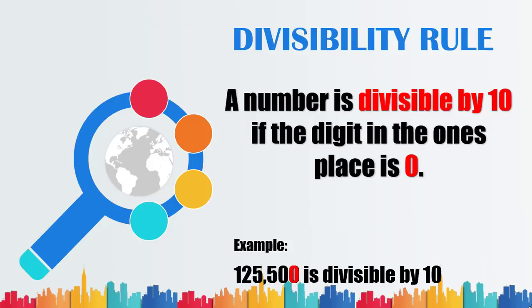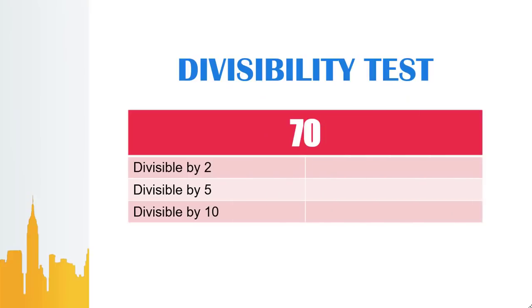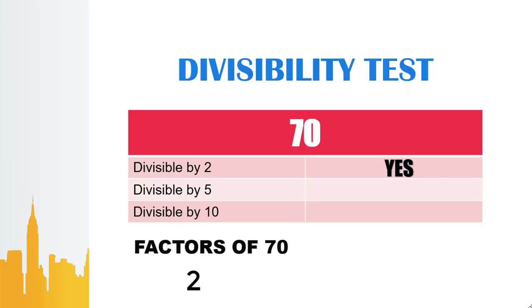Let's apply these rules to know if 70 is divisible by these numbers. Is 70 divisible by 2? Yes, since the 1's place in 70, which is 0, is even. Since 70 is divisible by 2, that makes 2 a factor of 70. Is 70 divisible by 5? Yes, since the 1's place in 70 is 0. Since 70 is divisible by 5, that makes 5 a factor of 70.